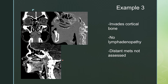Next case: a more subtle tumor. You can see soft tissue with absence of the hard palate and cortical irregularity where the bone is still there but is being eroded by this aggressive process. On the sagittal view and on bone windows, you can see absence of the hard palate anteriorly. This mass invades the cortical bone of the hard palate. On these images there is no lymphadenopathy and distant mets were not assessed. So this would stage as a T4N0MX due to invasion of the hard palate.